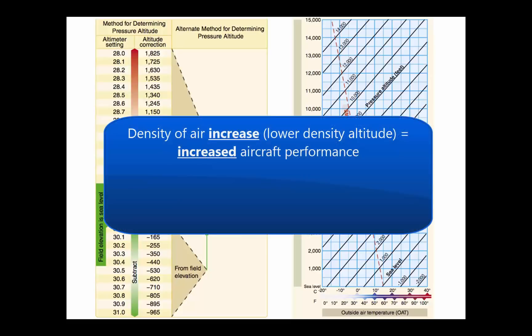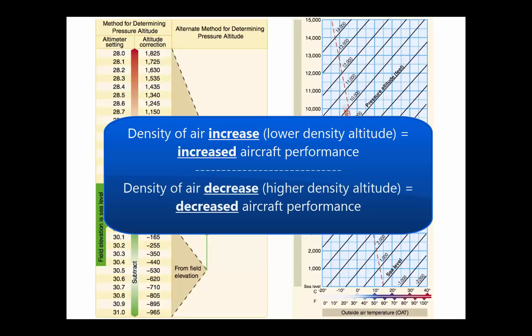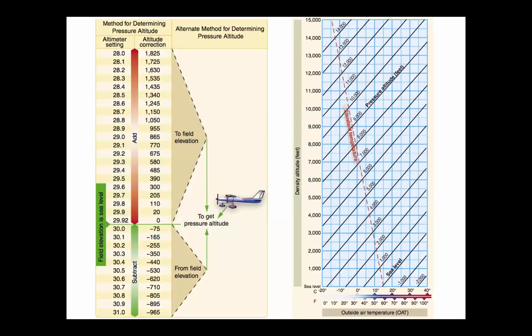As the density of the air increases, lower density altitude, aircraft performance increases. Conversely, as air density decreases, a higher density altitude, aircraft performance decreases. A decrease in air density means a high density altitude. An increase in air density means a lower density altitude.